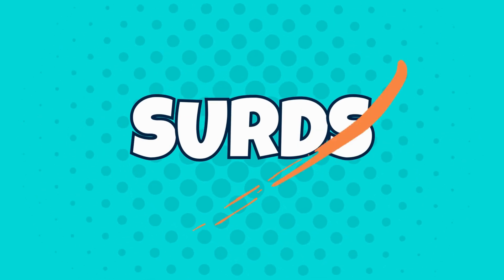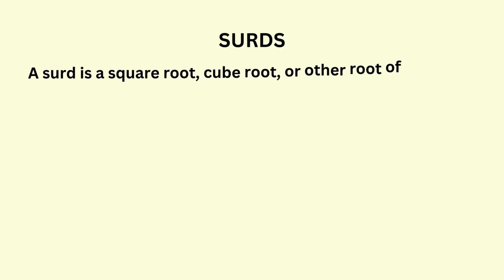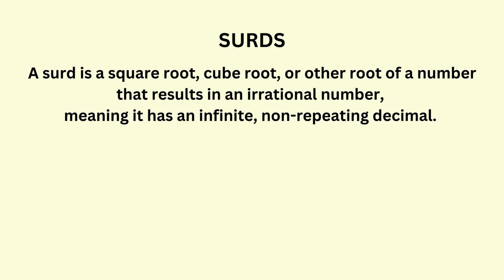Today we're diving into surds. What exactly is a surd? A surd is a square root, cube root, or other root of a number that results in an irrational number, meaning it has an infinite, non-repeating decimal.